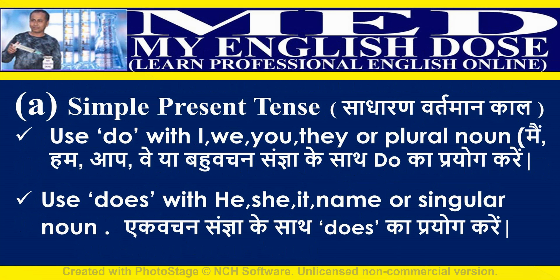In simple present tense, do and does are helping verbs. Be careful while using the helping verb. Use 'do' with I, we, you, they, or plural nouns. Use 'does' with he, she, it, a name, or singular noun.